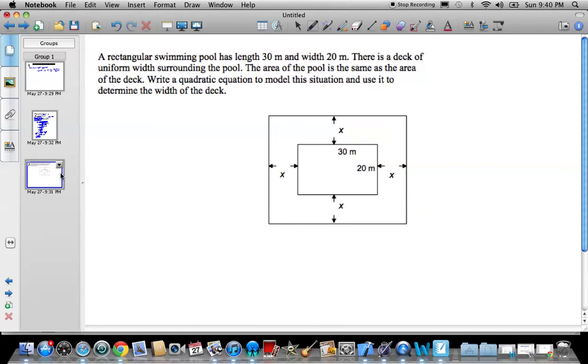All righty. A rectangular swimming pool has a length of 30 and width of 20. There's a deck of uniform width surrounding the pool. The area of the pool is the same as the area of the deck. So this is the pool, this deck here outside around is the same. So whatever this area here is, it's the same as this one. So let's write the dimensions first. The dimensions are going to be 2x plus 30, this is 2x plus 20. Now this guy here has an area of 600. The outside border area has an area of 600. So when you multiply these together, 2x plus 20, it's going to equal 1,200.